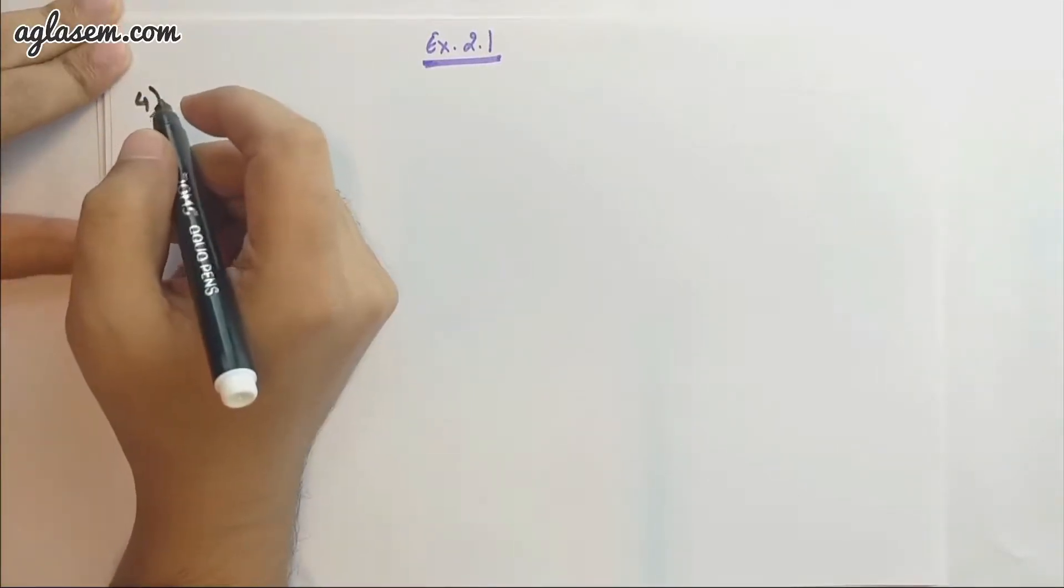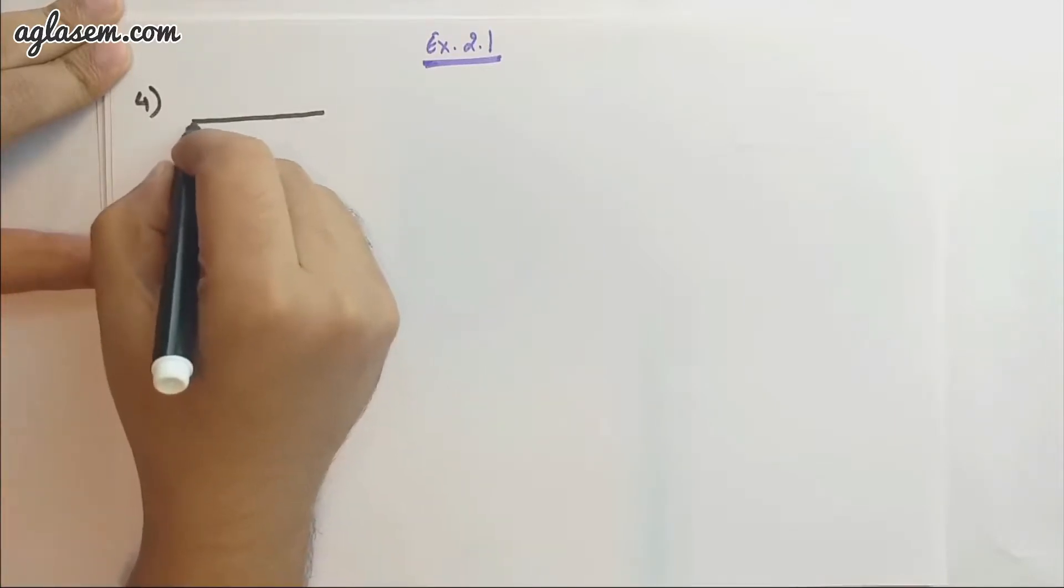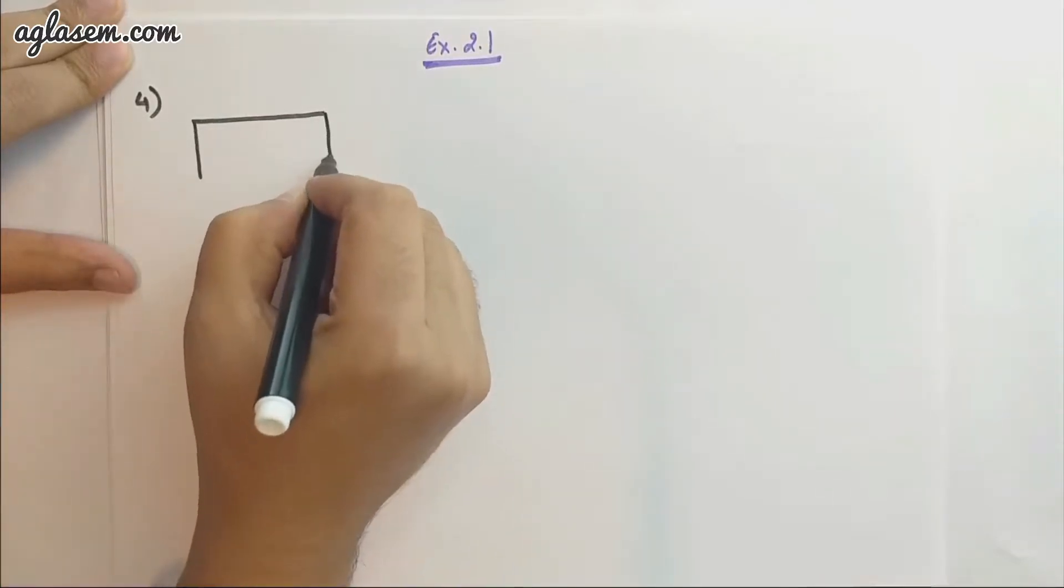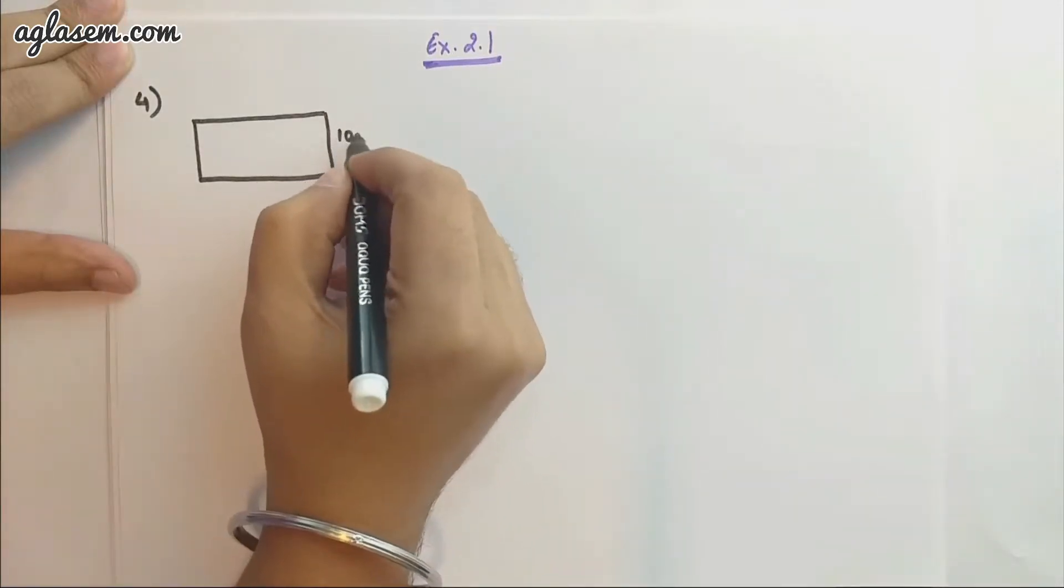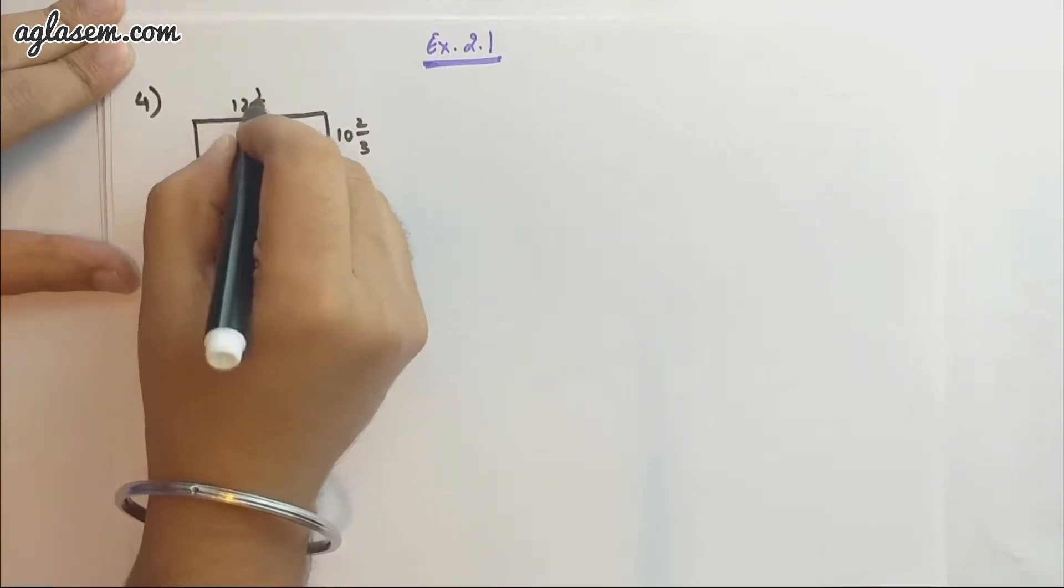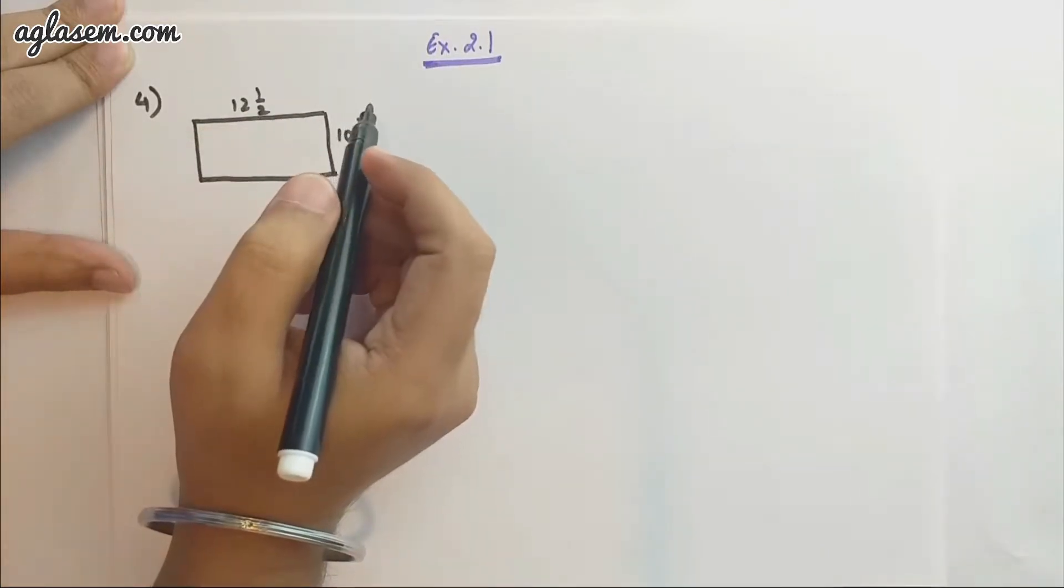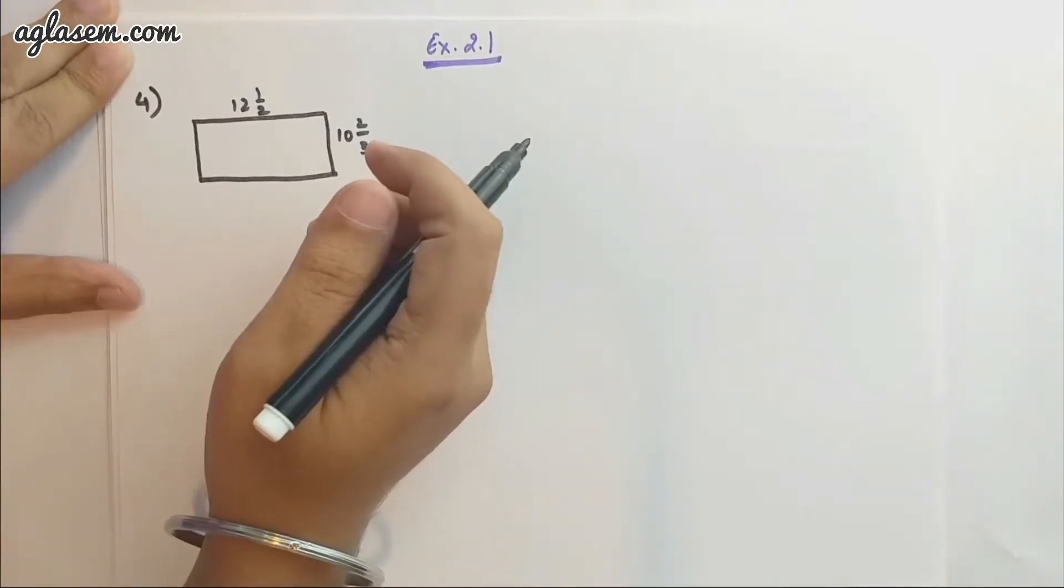Question number 4 says there is a rectangular sheet of paper which is 12 1/2 cm long and 10 2/3 cm wide. We need to find its perimeter.